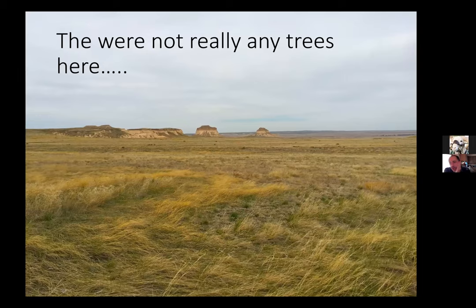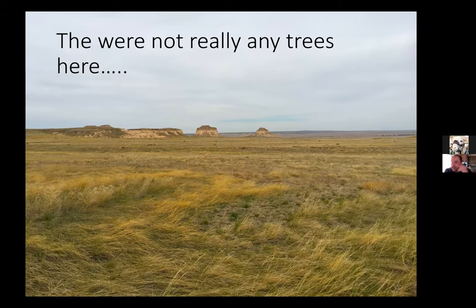If you look at the Front Range and out of the foothills, there were not trees here before European settlers showed up and planted them. There were trees along rivers and in the foothills, but for the vast majority of the area, these were grasslands. This is Pawnee Buttes National Grassland, east of Fort Collins — this is what it looked like before we planted a lot of trees here.